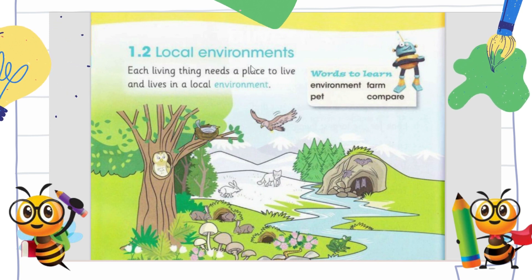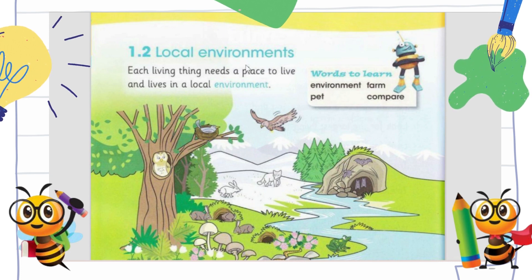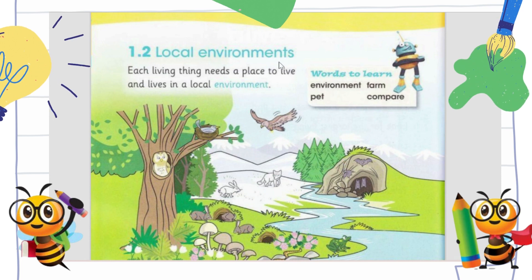First of all, we should know how to pronounce the word 'environment.' The N is silent — environment. Let's spell it: E-N-V-I-R-O-N-M-E-N-T. Every living thing has a different local environment.